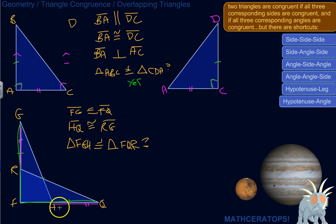Is triangle FGH congruent with FQR? Well, let's see. So let's focus on this side over here, this FQ and FG business. So if FQ is congruent with FG, and HQ is congruent with RG, then FR must be congruent with FH.